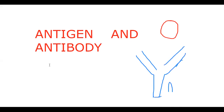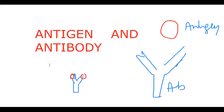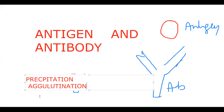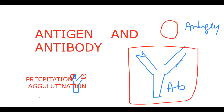There is an antibody and there is an antigen. Whenever an antigen and antibody bind each other, that complex is sometimes visible in the form of precipitation, and sometimes in the form of agglutination.